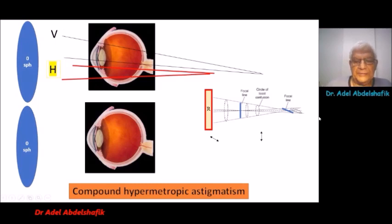Here, an example of compound hypermetropic astigmatism. As you can see, both the vertical and the horizontal are behind the retina. This is the retina. Everything is behind.